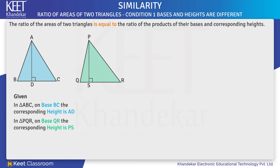Therefore, in proof, we have: area of triangle ABC upon area of triangle PQR equals BC into AD upon QR into PS.